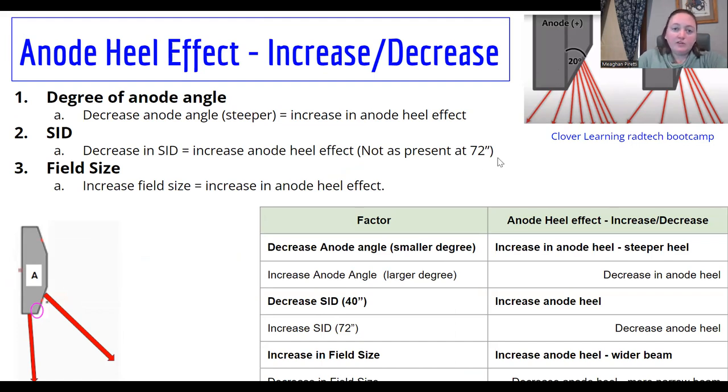But so the anode heel effect will either decrease or increase with the degree of angle. It will increase or decrease with the SID and field size. So all of these factors can either increase or decrease our anode heel effect or change the effect.